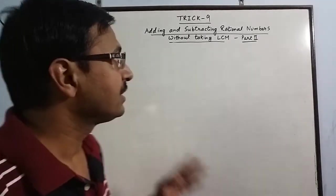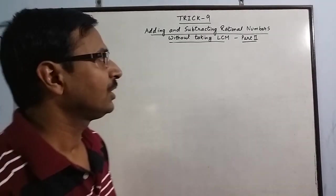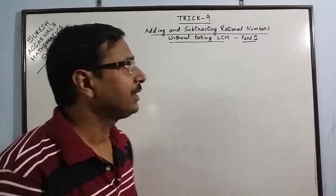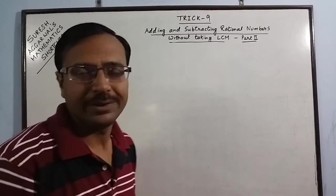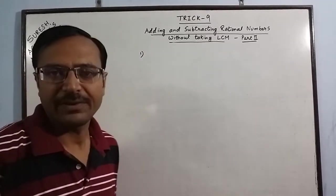Now let us complete this trick number 9, in which we will be dealing with rational numbers having a common factor in the denominators and how they can be dealt with.